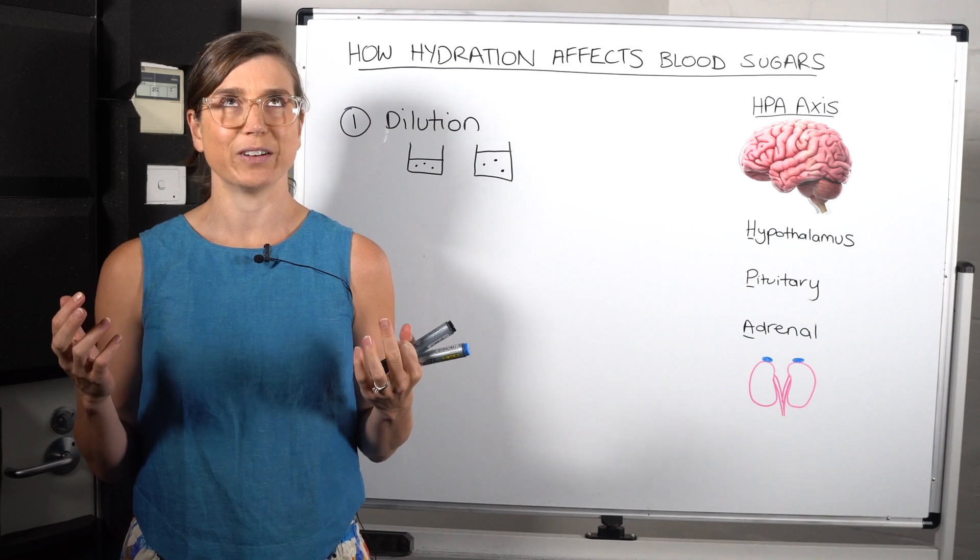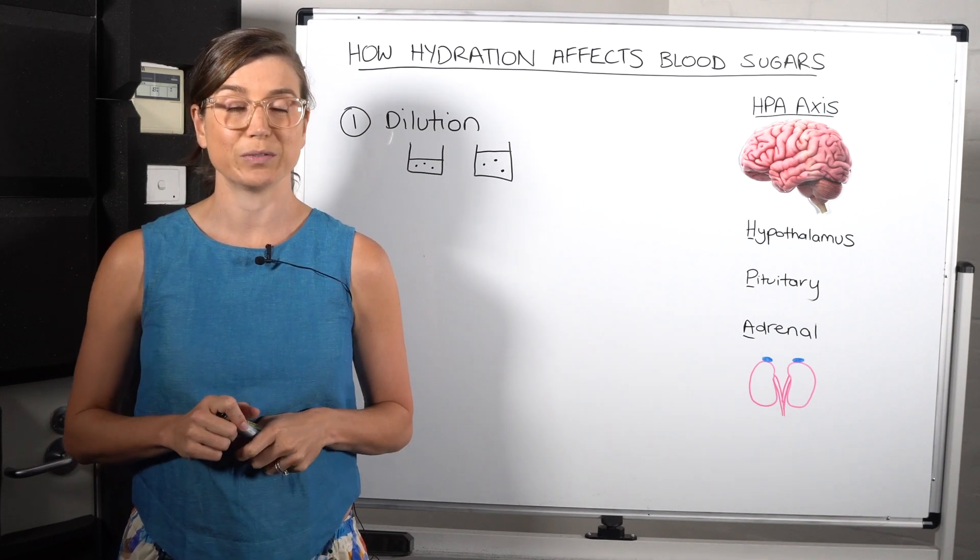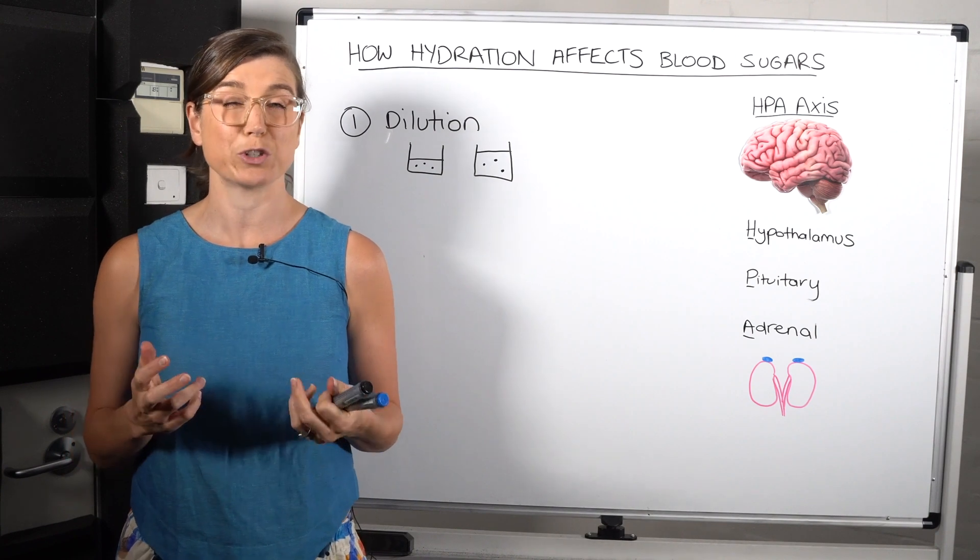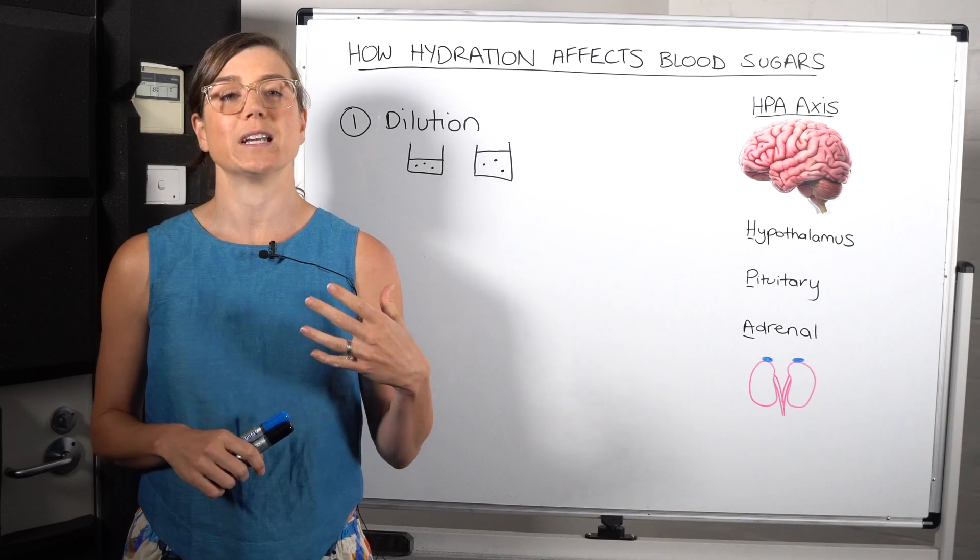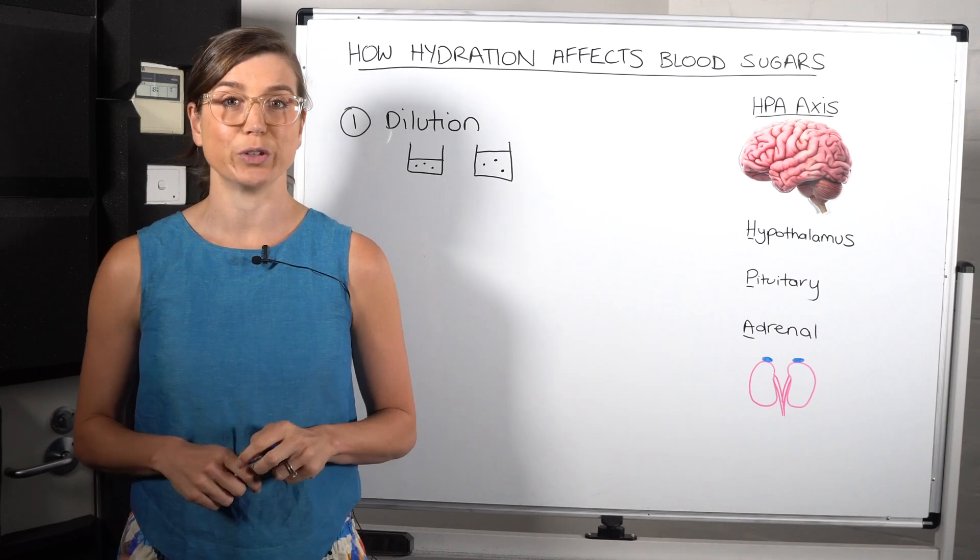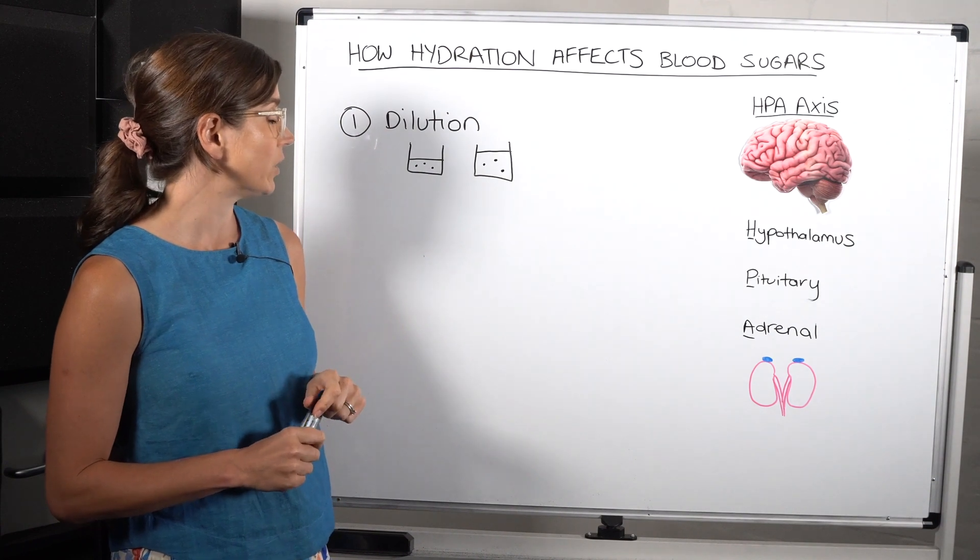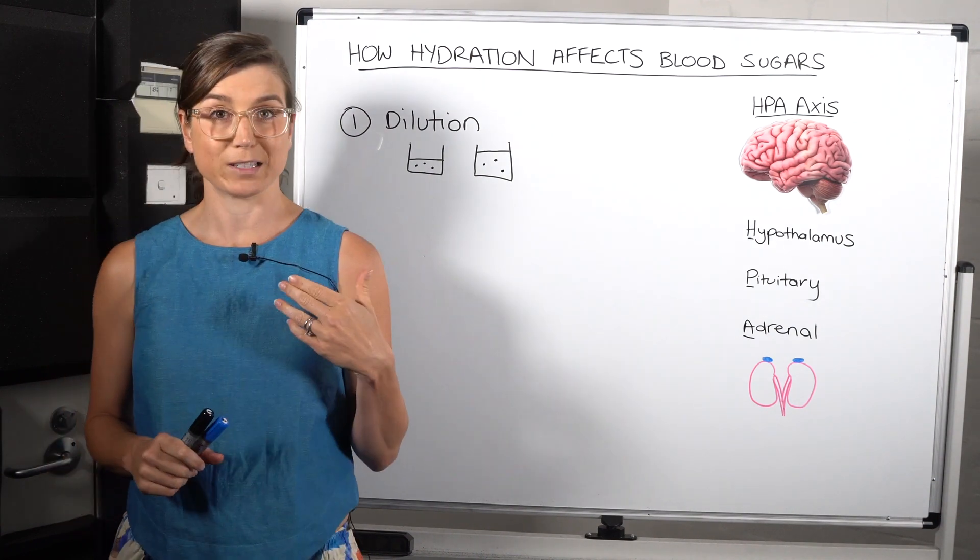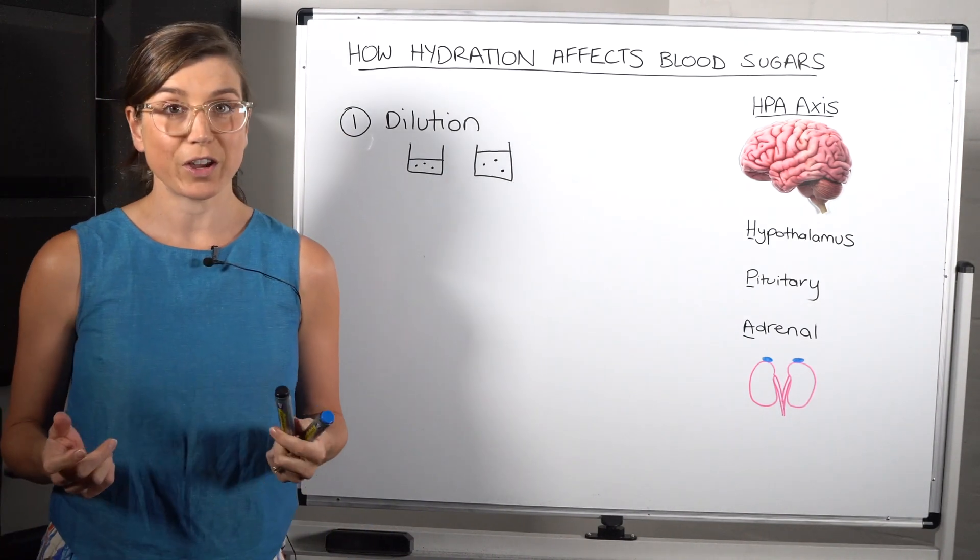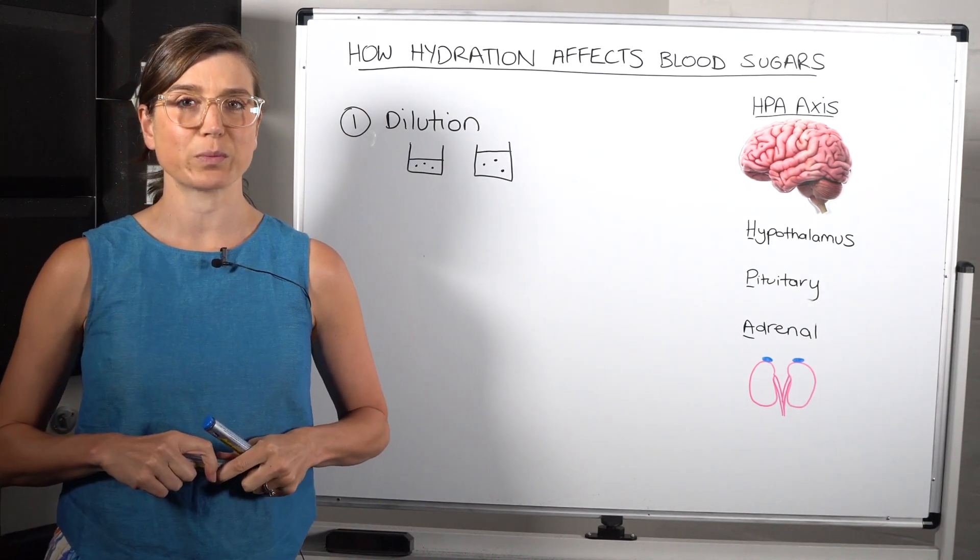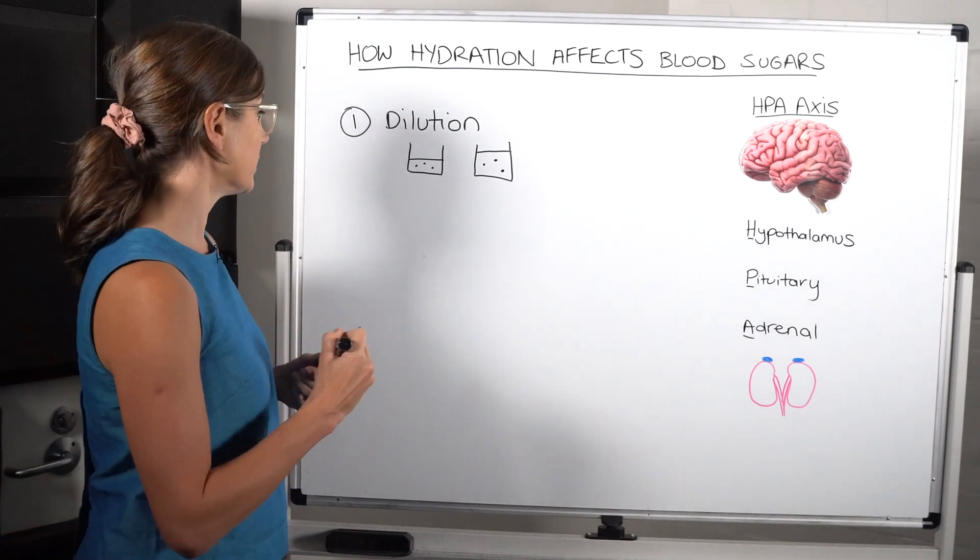There is a maximum or there is a limit to how much water or fluid you should be drinking because you can drink too much fluid. So it's just really about staying hydrated and not getting dehydrated to ensure that your blood concentrations aren't going up because of that. So dilution is the first thing, first reason for how hydration can affect your blood sugars.